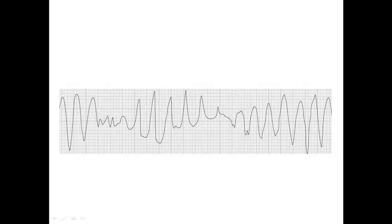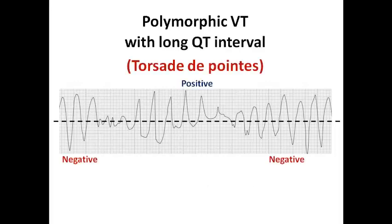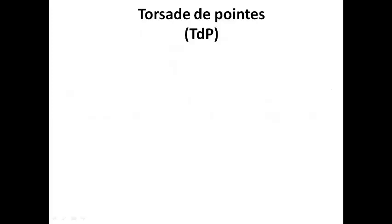If we draw an imaginary line to represent the baseline of the ECG, we can see that the complexes are sometimes negative, sometimes positive, sometimes negative again in a very short cycle. There is continuous twisting of the ECG axis around the baseline, resulting in a very rapid and irregular rhythm. This is polymorphic VT with long QT interval, which we call Torsade de Pointe.